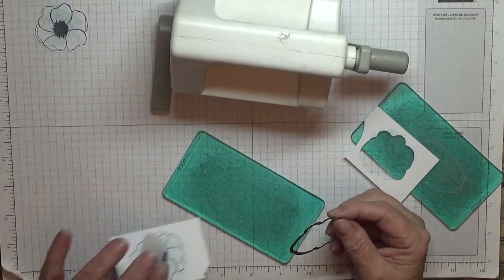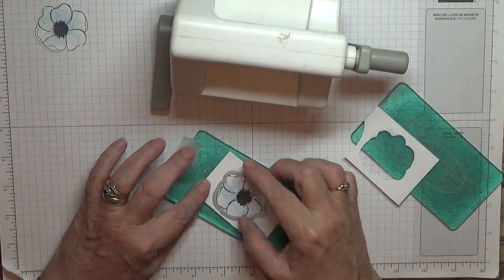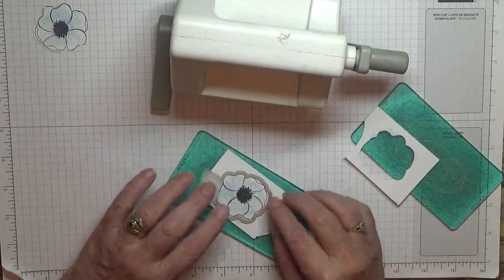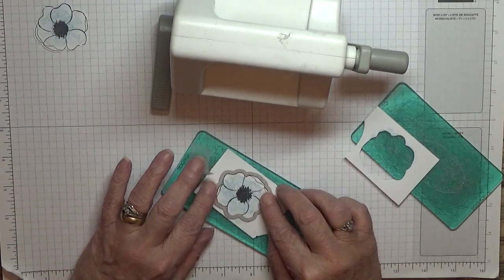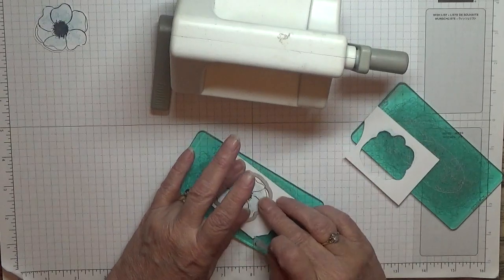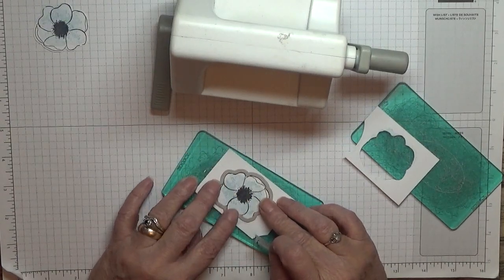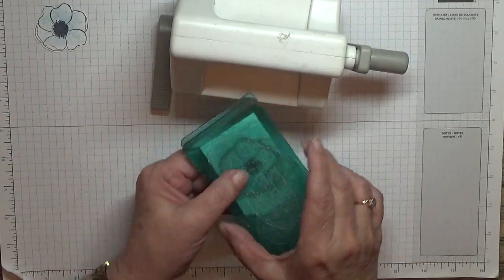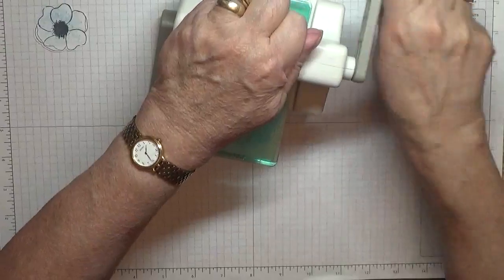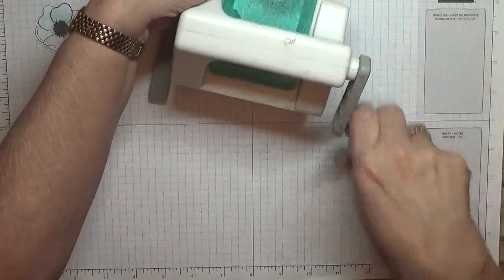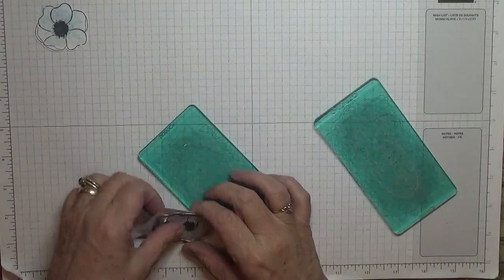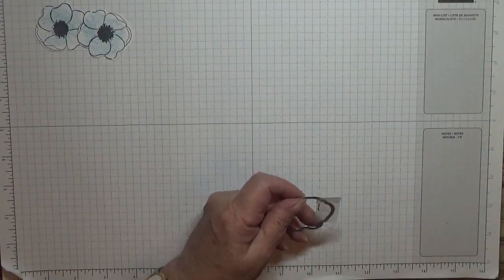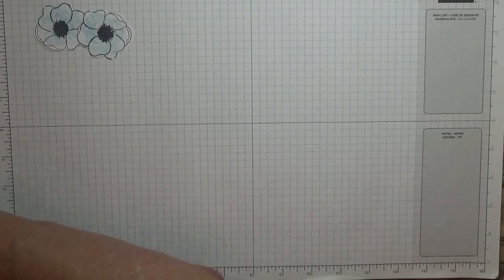And do the same for this one. On the first card I did, that's it. I used Purple Posy and Highland Heather. And there's the second flower, quite nice. Put that back in the box.